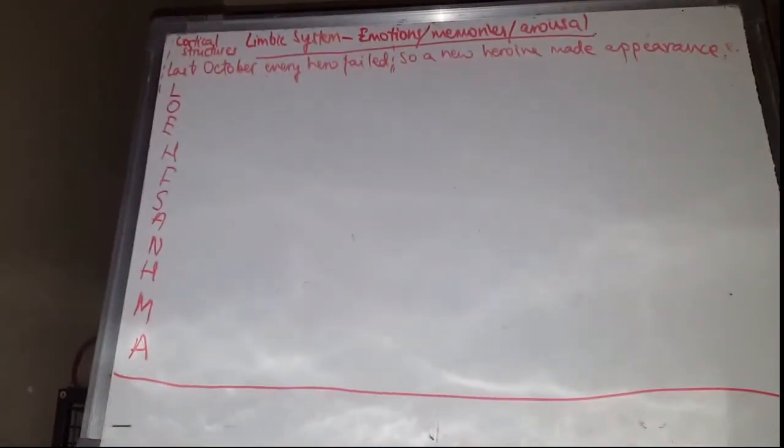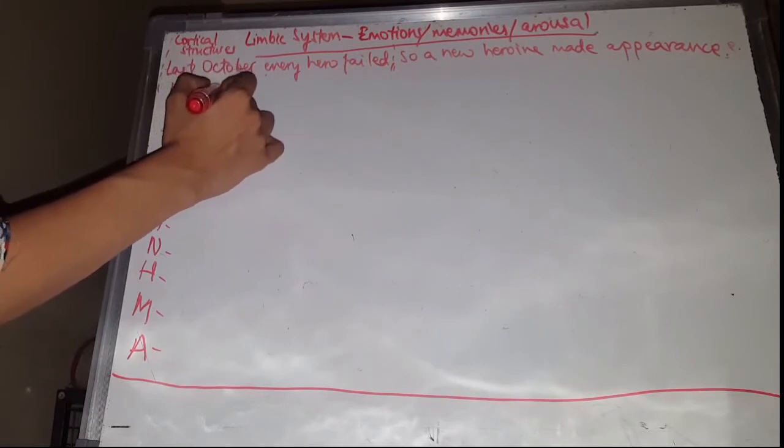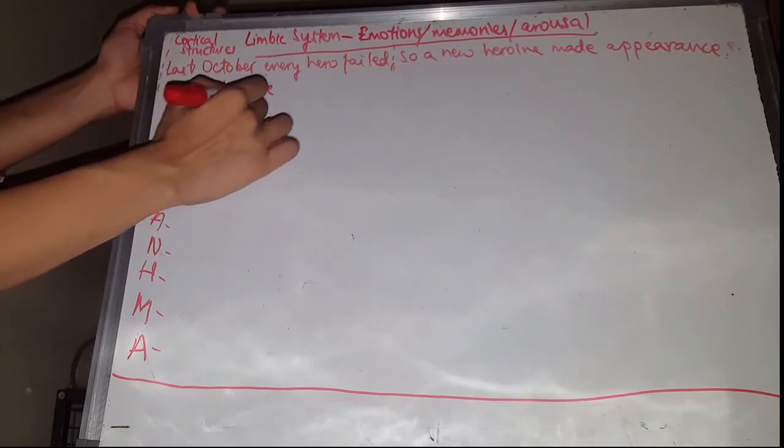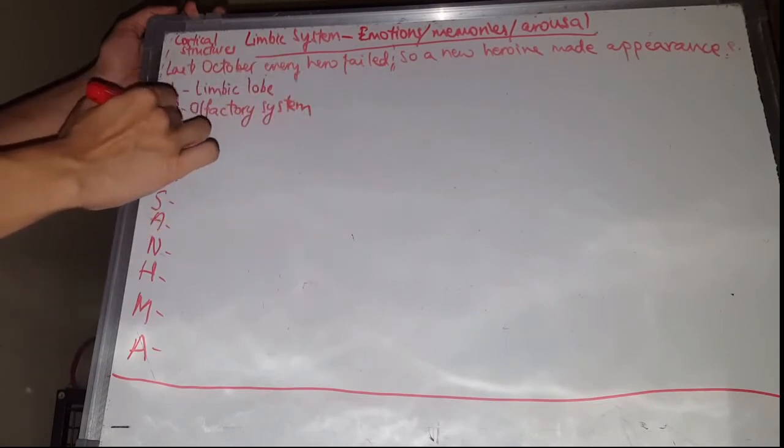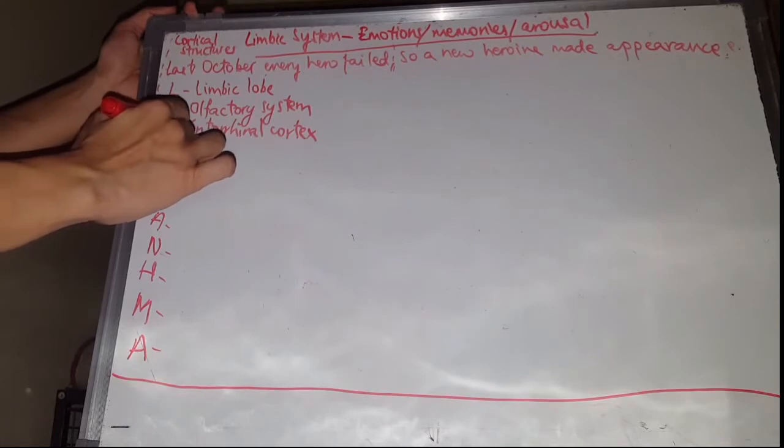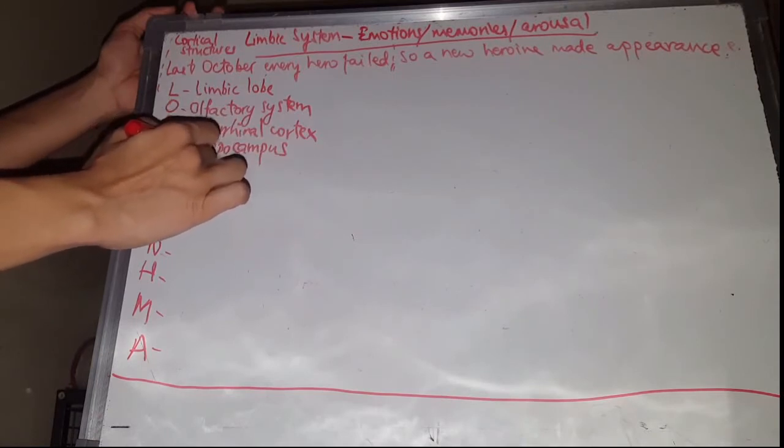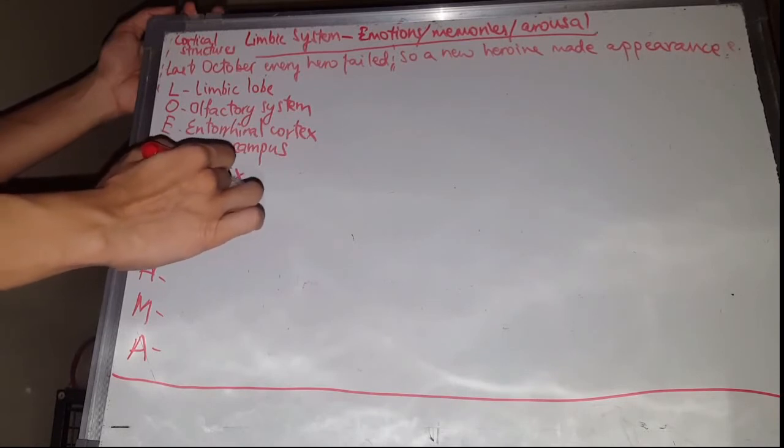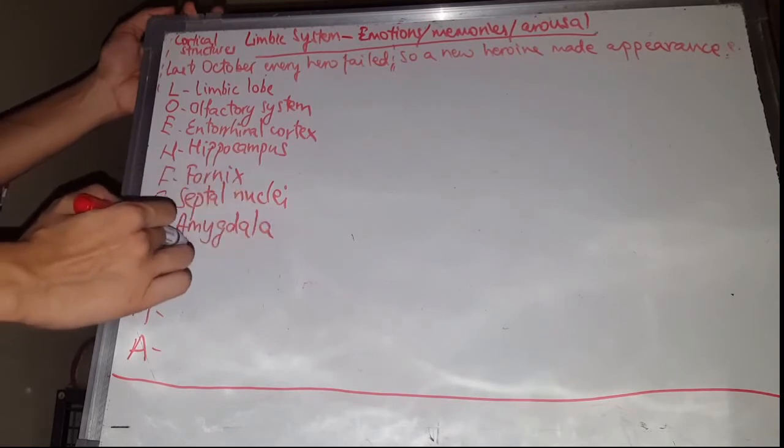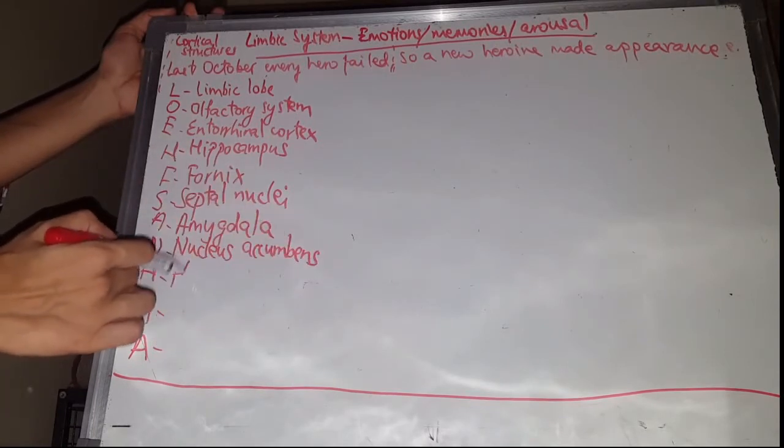So let's start with naming them. Limbic lobe, O for olfactory system, E for entorhinal cortex, H for hippocampus, F for fornix, S for septal nuclei, A for amygdala, N for nucleus accumbens, H for the hypothalamus.